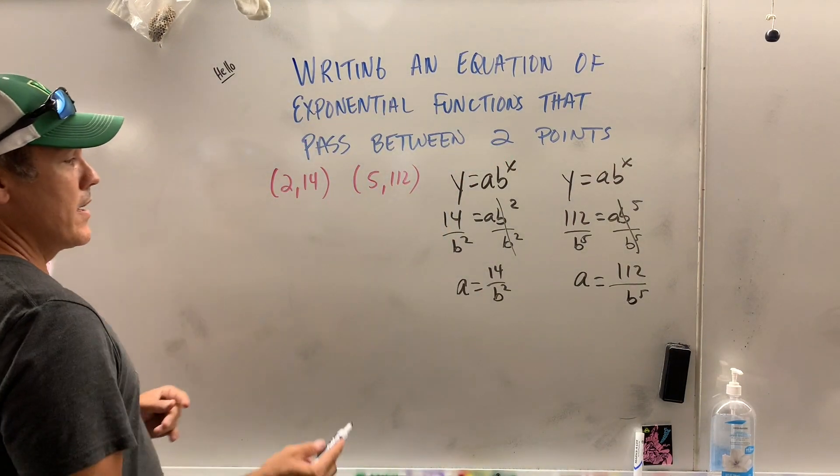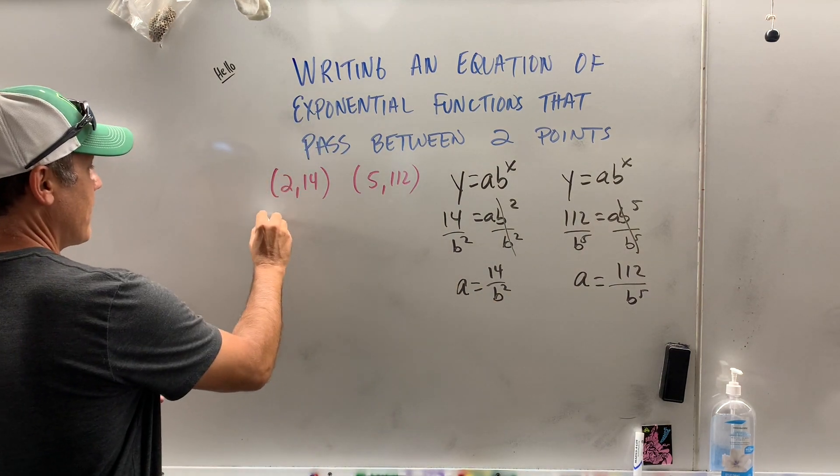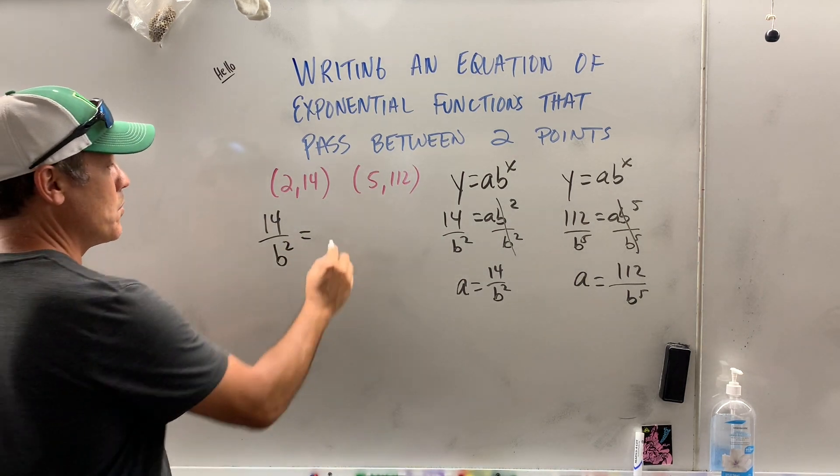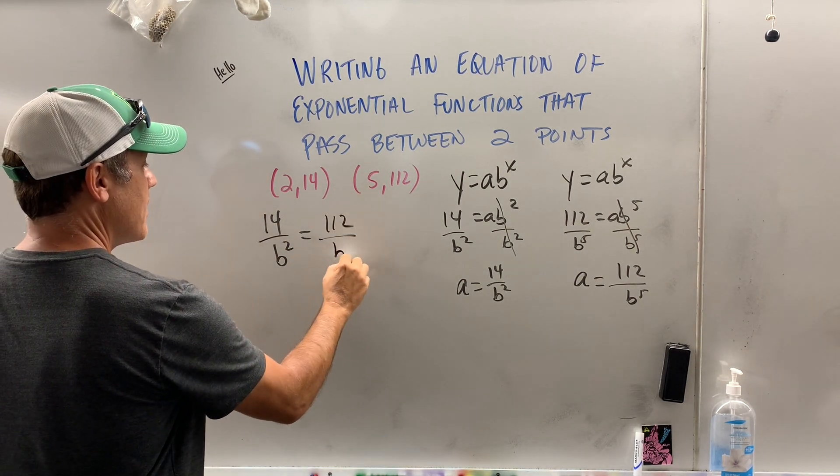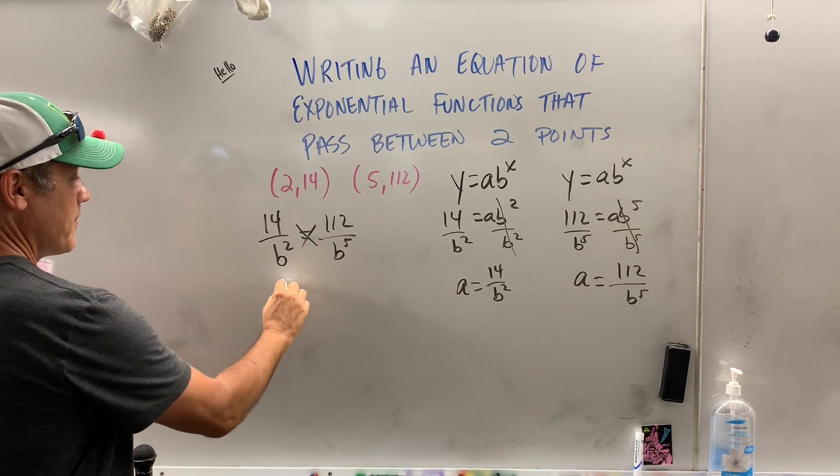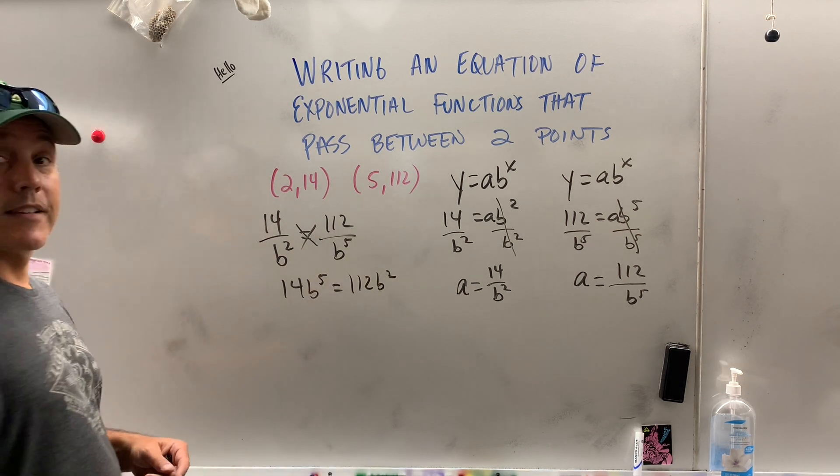Got more room over here, so now I can use that equal values method. Since they both equal a, I can take 14 over b squared and set that equal to 112 over b to the fifth. Now, I'm going to cross-multiply. 14b to the fifth equals 112b squared.